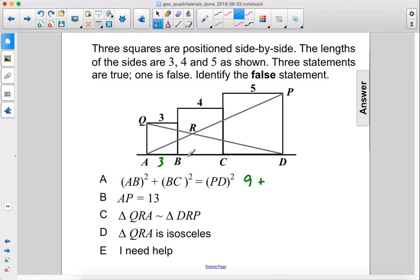Plus BC squared, so this length here is 4 because it's part of the square with sides of length 4, so that is 16, equals PD, which is 5 since this is a square with sides of length 5, that is 25, 5 squared, so this is true.